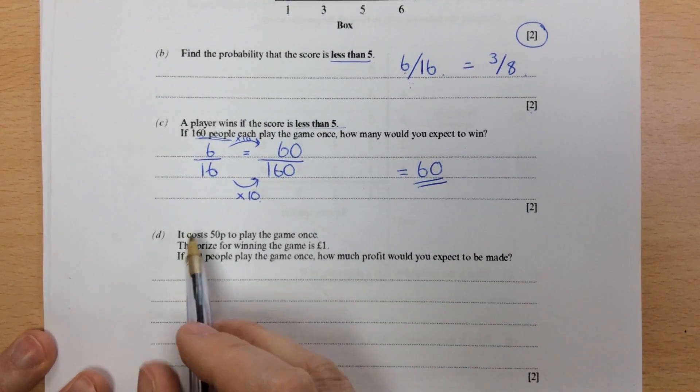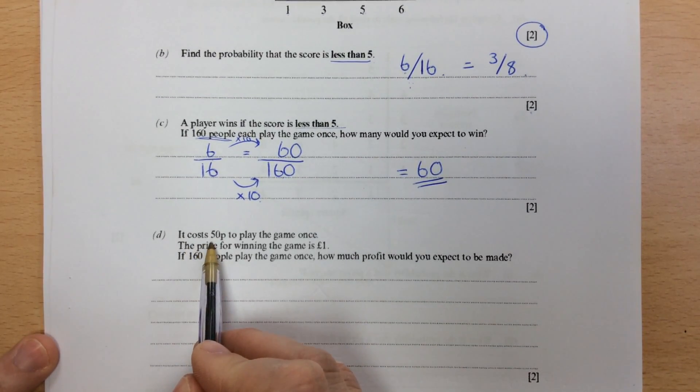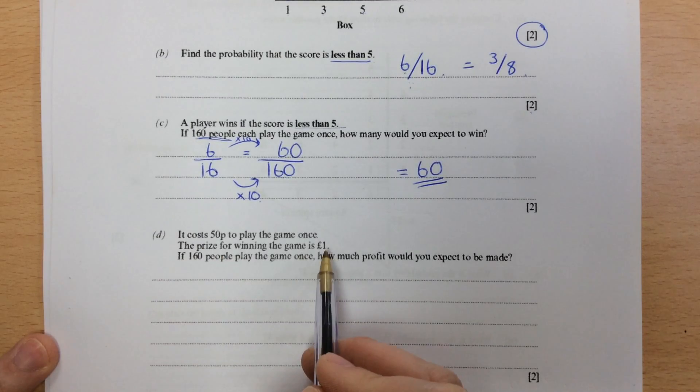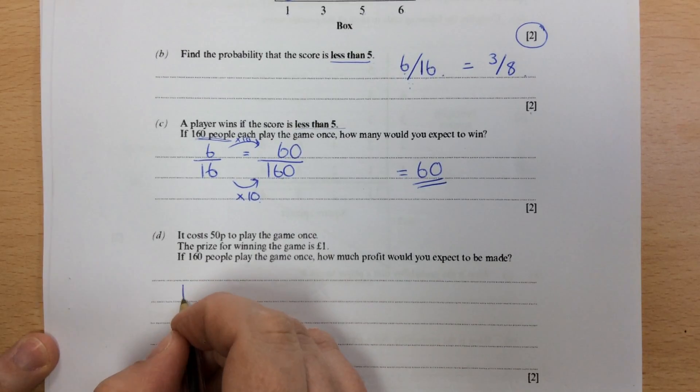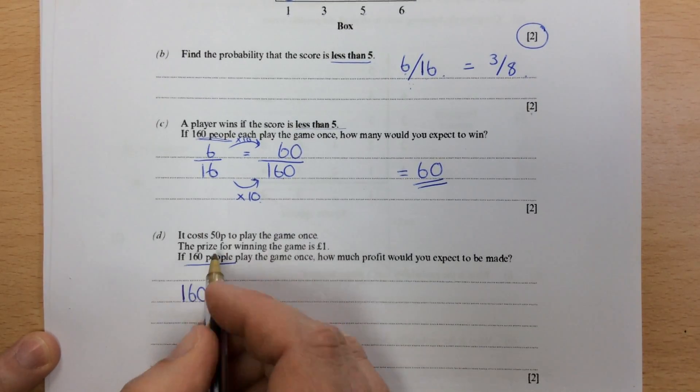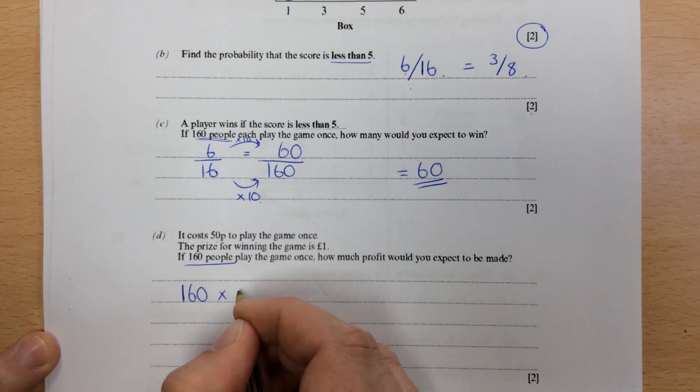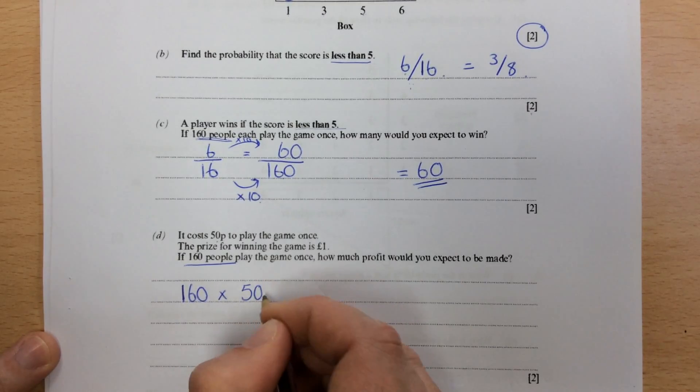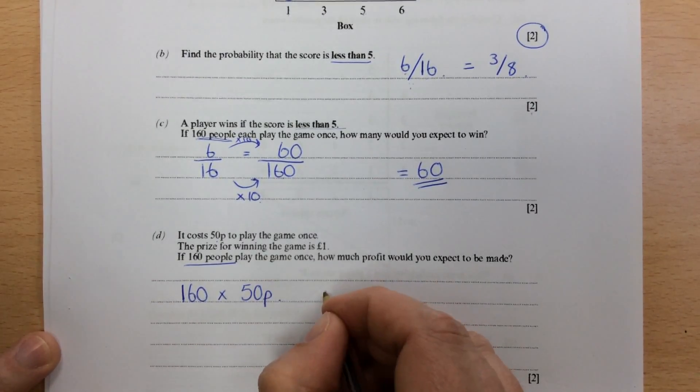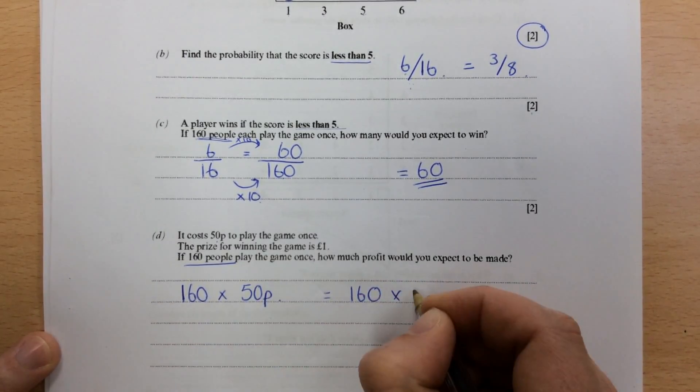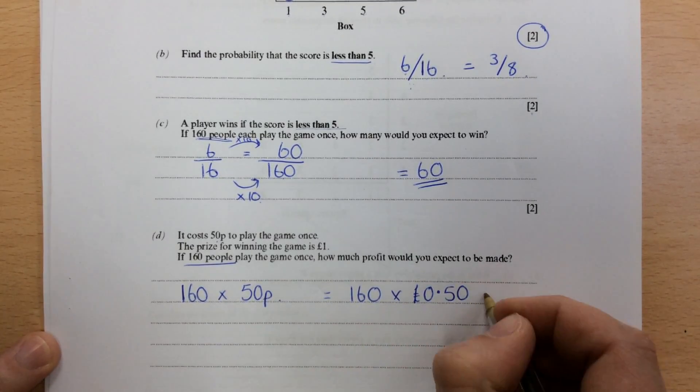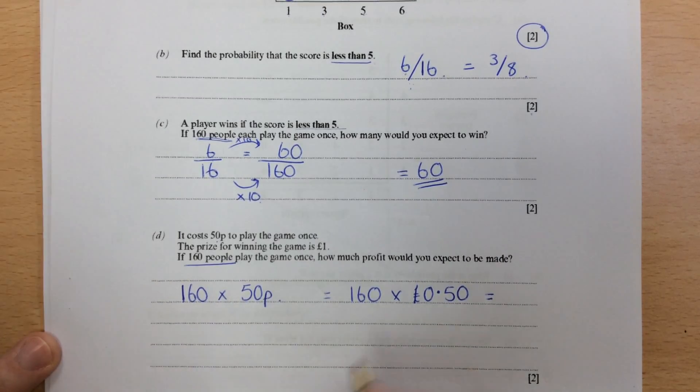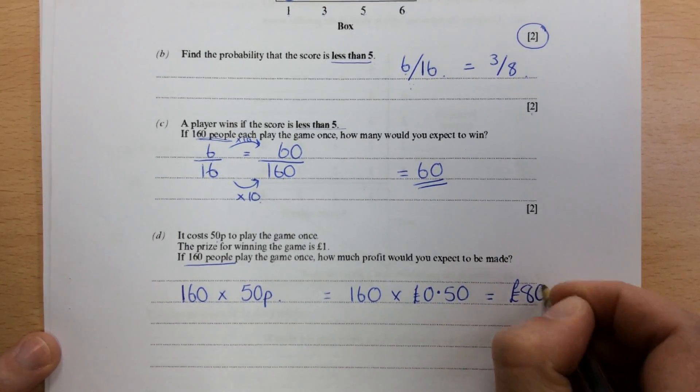Now we've got to work out the cost. If 50 pence to play the game and the prize is a pound, we want to work out the profit that the person's going to make. So the first one I'll do is 160 people are playing the game. 50 pence to win. Or you could say that was 160 times 0.50 for your pounds. And you've got a calculator, and that comes up as 80 pounds.